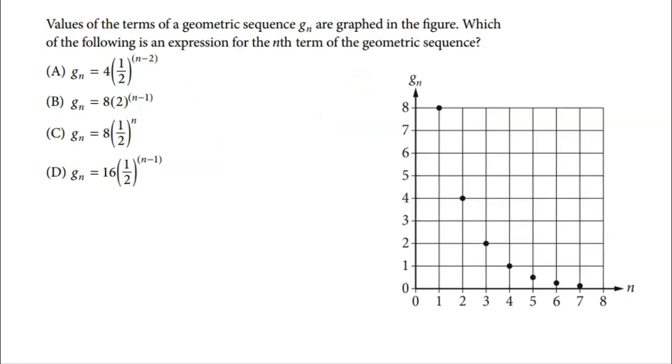This problem says values of the terms of a geometric sequence g sub n are graphed in the figure, which of the following is an expression for the nth term of the geometric sequence. All right, so they give us a graph here of some inputs and then some outputs. Now, a couple of things I want to do that's going to make this problem hopefully a little bit easier. First, what is the generic formula for a geometric sequence? Well, it's a sub k, that's the kth term, any k you want. That could be the third term, the fourth term, the fifth term, whatever term you want, multiplied by the common ratio raised to n minus k. So again, k is any term you want. So this could be the first term, that means k is 1. This could be the 15th term. That means k is 15. Whatever you want, then r is that common ratio that we're multiplying by.